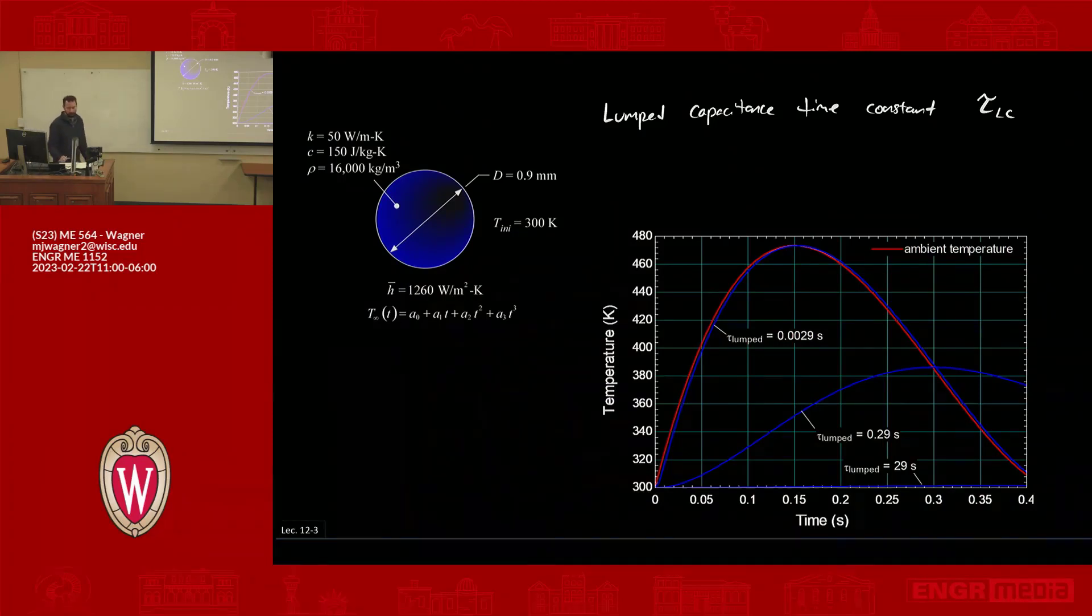The idea with the lump capacitance time constant is it's an indicator of how long this object, whatever you're modeling, is going to take to respond to the surroundings. So let's maybe as a thought experiment imagine I calculate the amount of time this body is going to take to respond. And let's say I find that it takes a really short amount of time to respond, like three hundredths of a second is the characteristic response of this object. If I then plotted the result, you're going to see that this body basically follows exactly along the ambient temperature line because it's just responding really quickly.